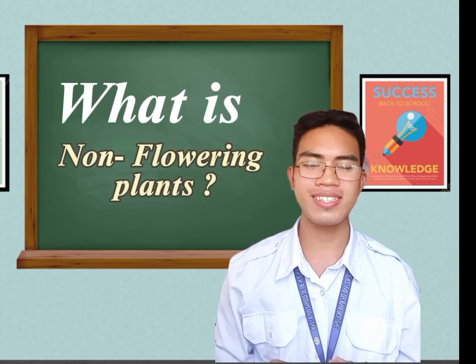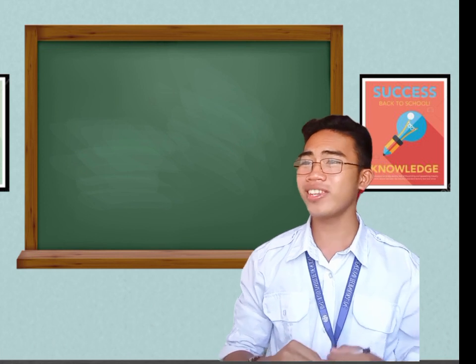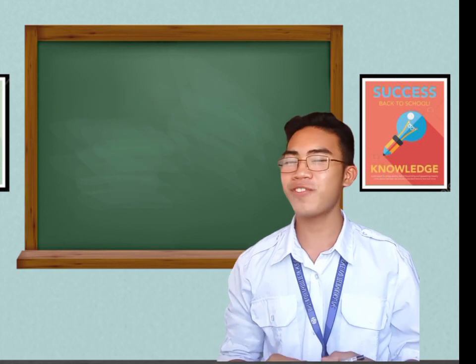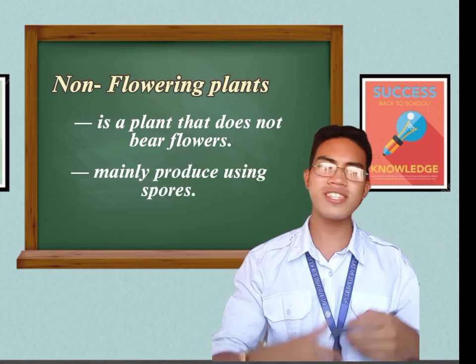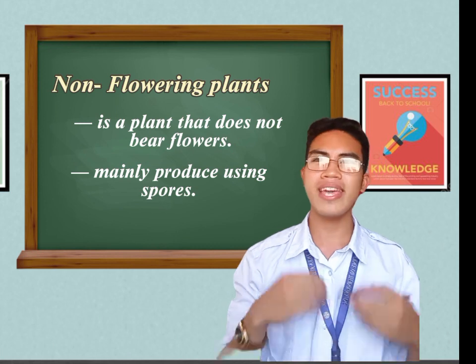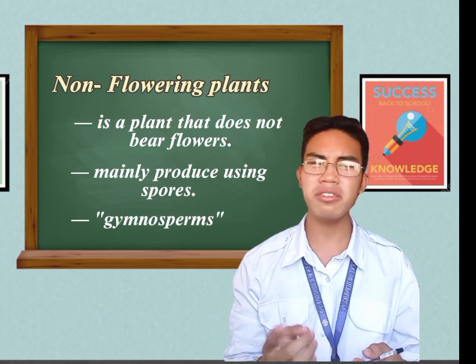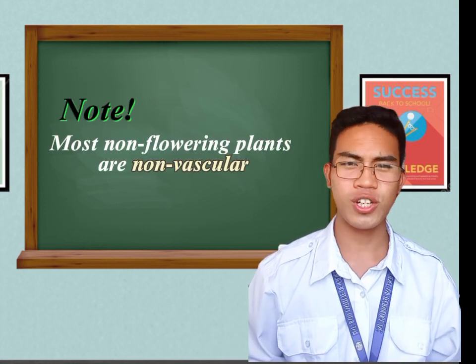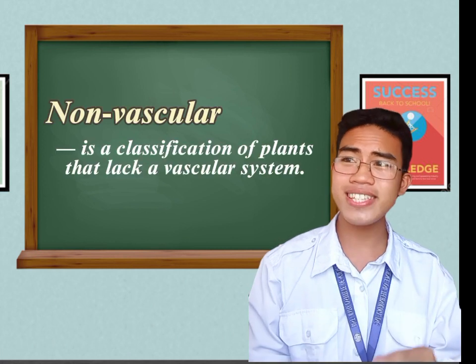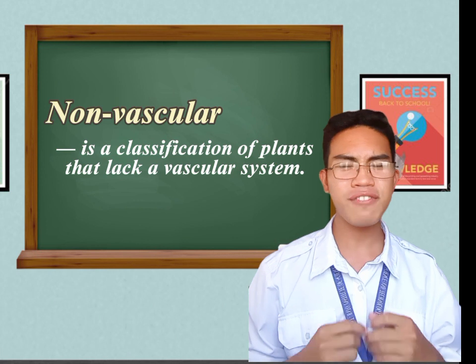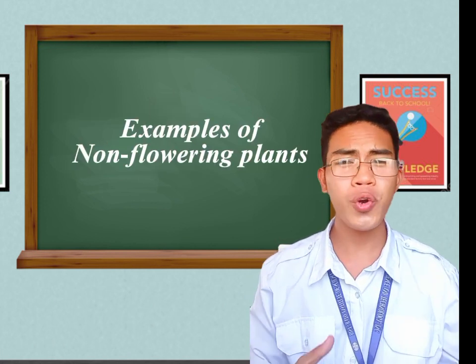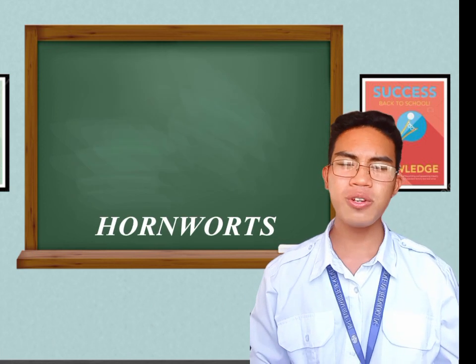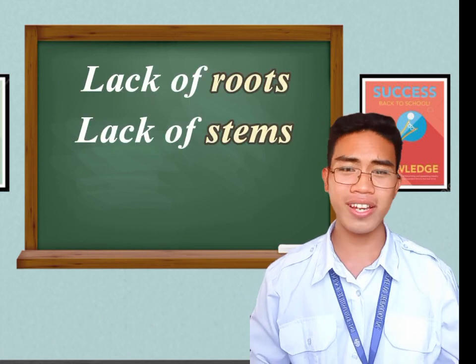Now, what is a non-flowering plant? Yes, Manuel — very good. Non-flowering plants are those plants that cannot bear or produce flowers. They mainly reproduce using spores. The exception are gymnosperms, which produce seeds but no flowers. Most non-flowering plants are non-vascular, meaning they lack a vascular system — specifically xylem and phloem — that transports nutrients and water. Good examples of non-vascular non-flowering plants are liverworts, mosses, and hornworts, which lack roots, stems, and leaves.